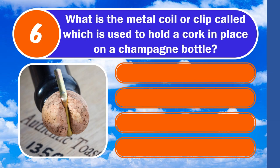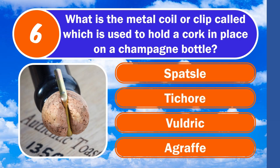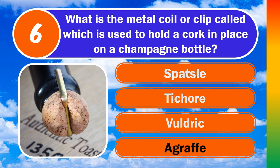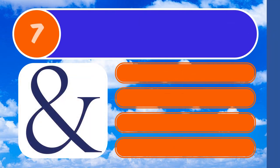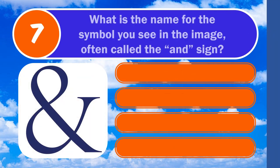Question six: what is the metal coil or clip called which is used to hold a cork in place on a champagne bottle? Is it Spatzle, To Shore, Voldrick, or Agrafe? The answer is agrafe.